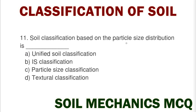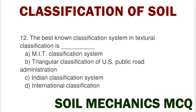Next question: the soil classification based on particle size distribution is — option A unified soil classification, option B IS classification, option C particle size classification, option D textural classification. The correct answer is option D textural classification.